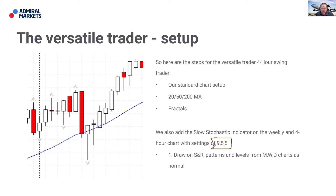Our first step is to get into a routine of drawing on support and resistance — any patterns and levels from monthly, weekly, and daily charts. This should be almost automatic whenever you open a chart. It doesn't matter whether it's Bitcoin, gold, EUR/USD, or copper. You start by drawing significant levels of support and resistance, patterns, and important big round numbers.